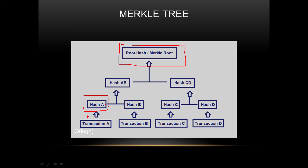The two leaf node hashes are combined and placed into their parent node — so one parent node contains the combined hash of A and B, and another contains the combined hash of C and D. The root hash then contains the combined hash of both parent nodes, resulting in just one root hash no matter how many transactions are stored in the block.